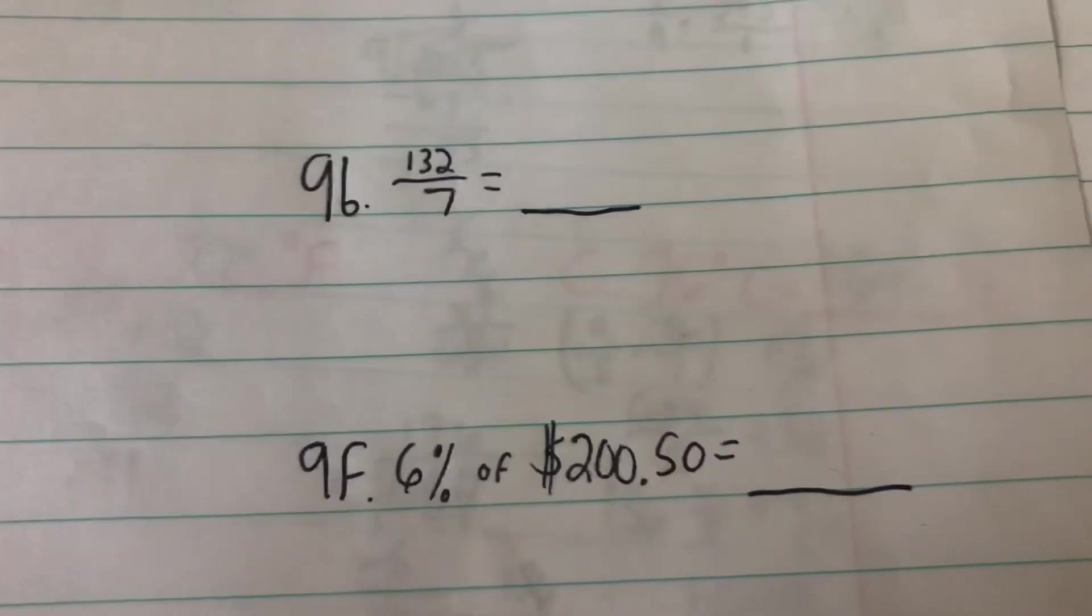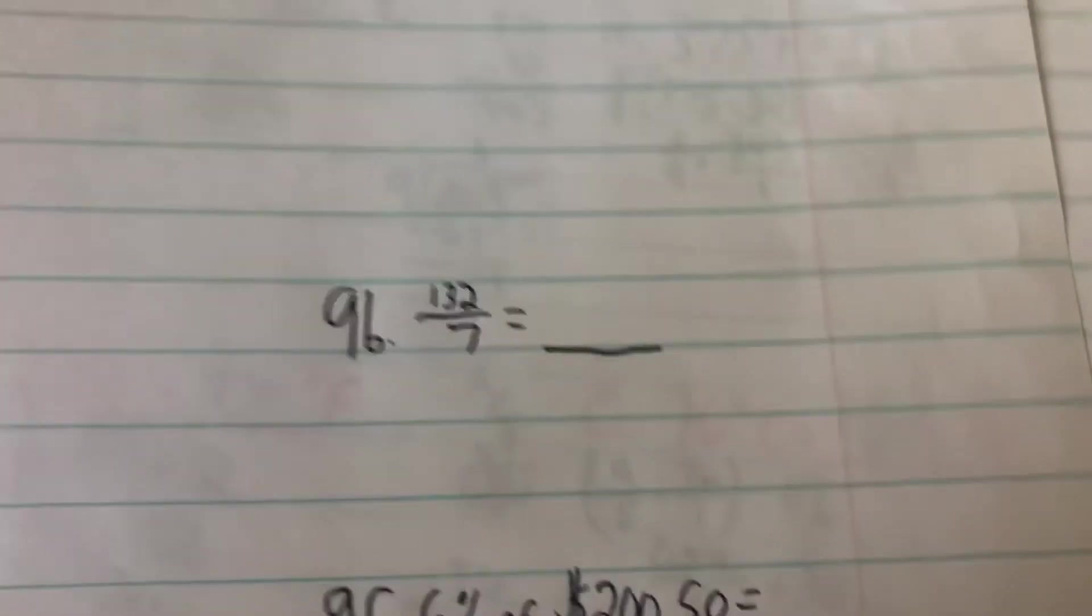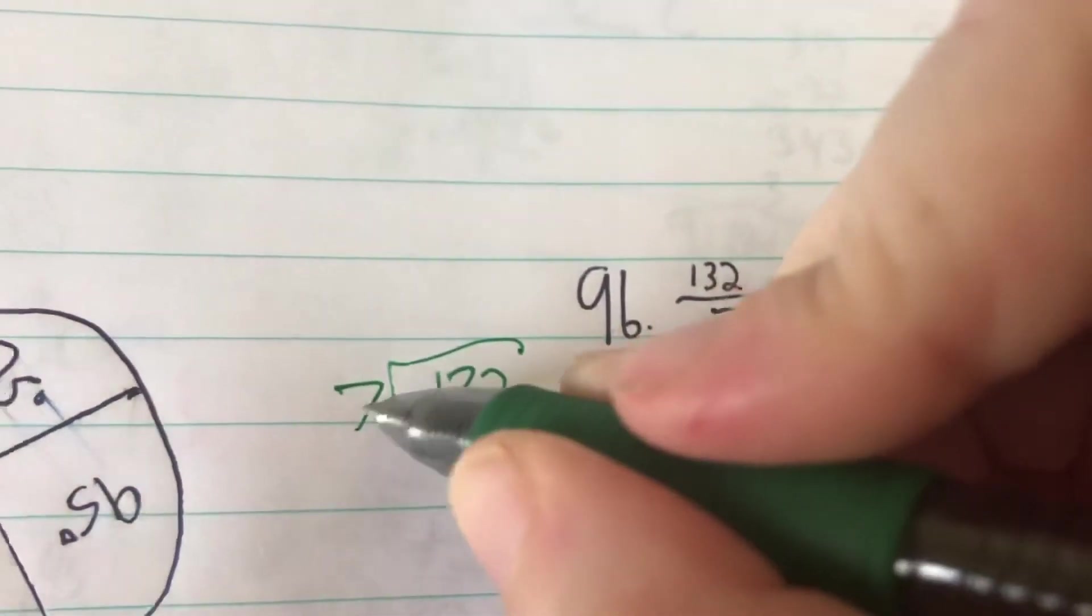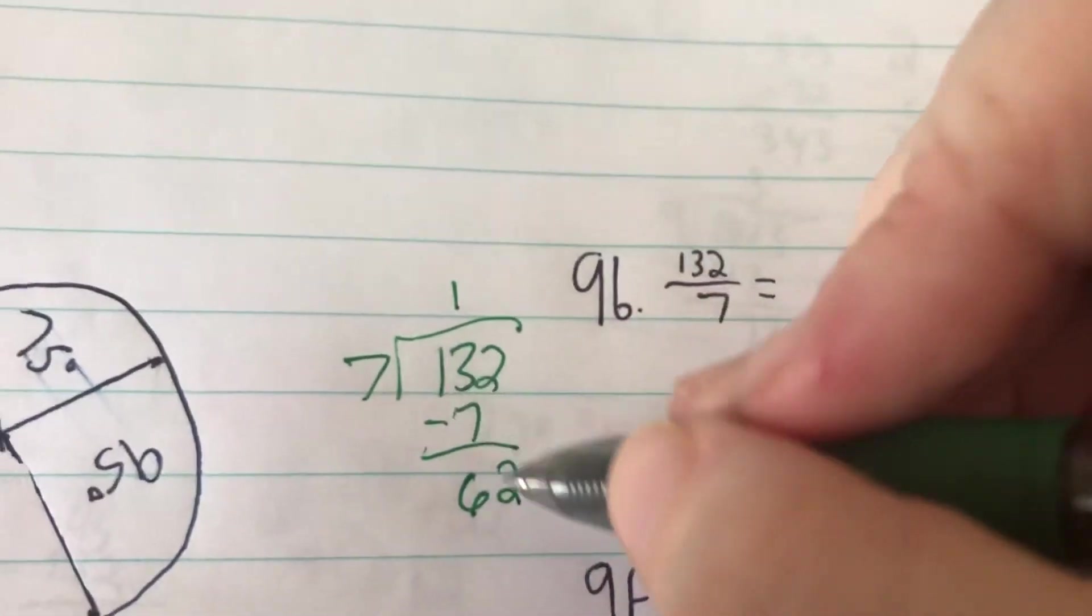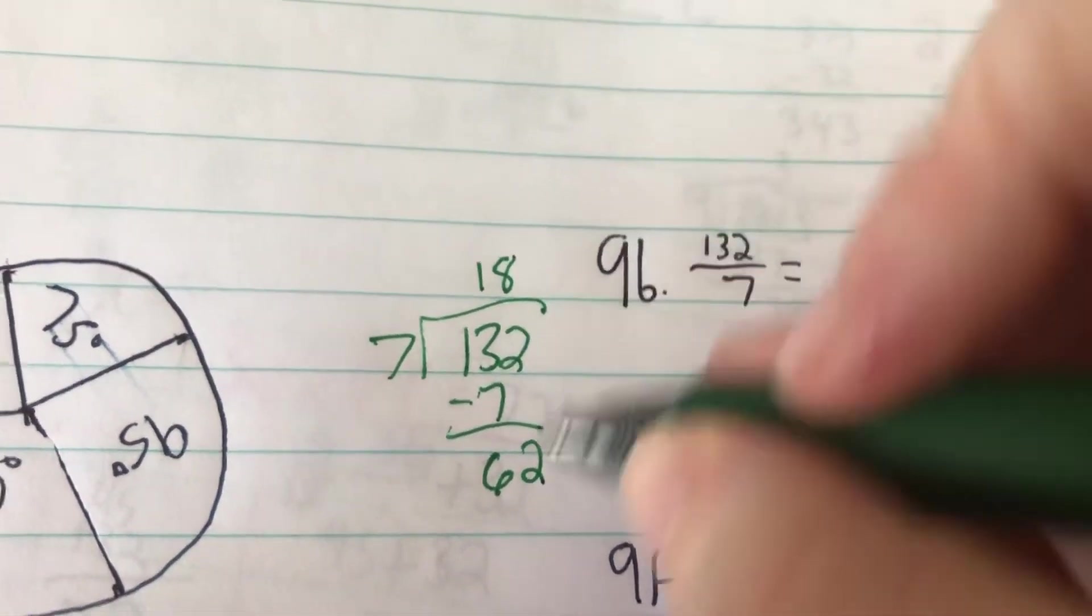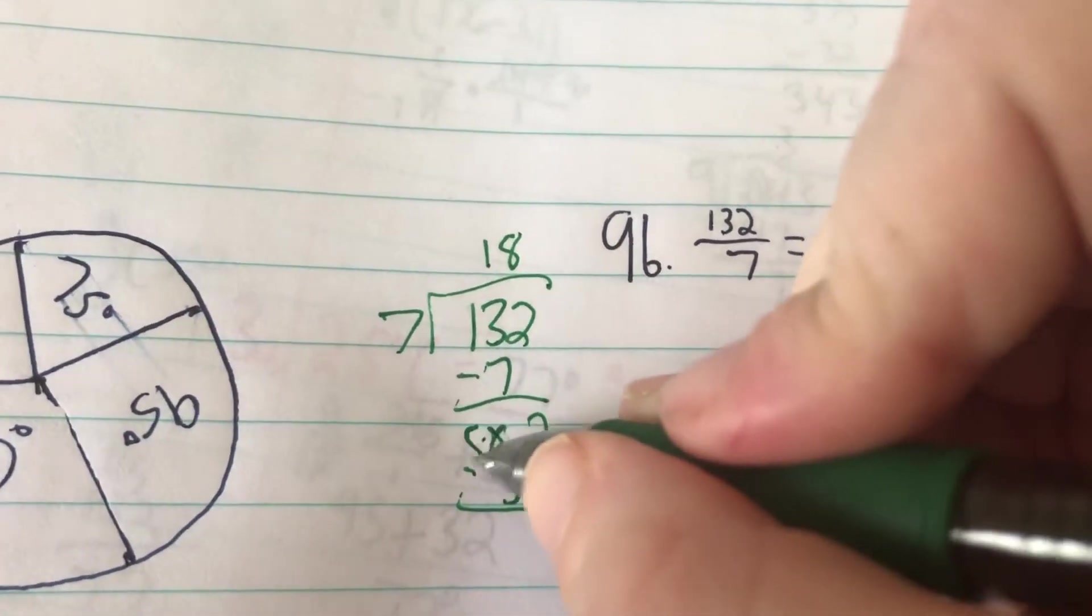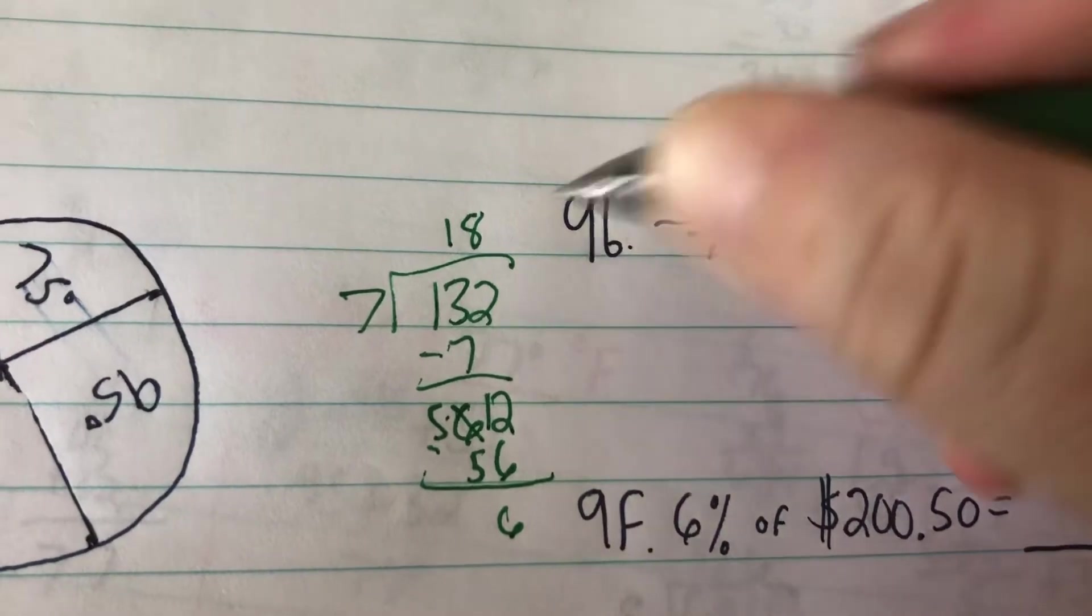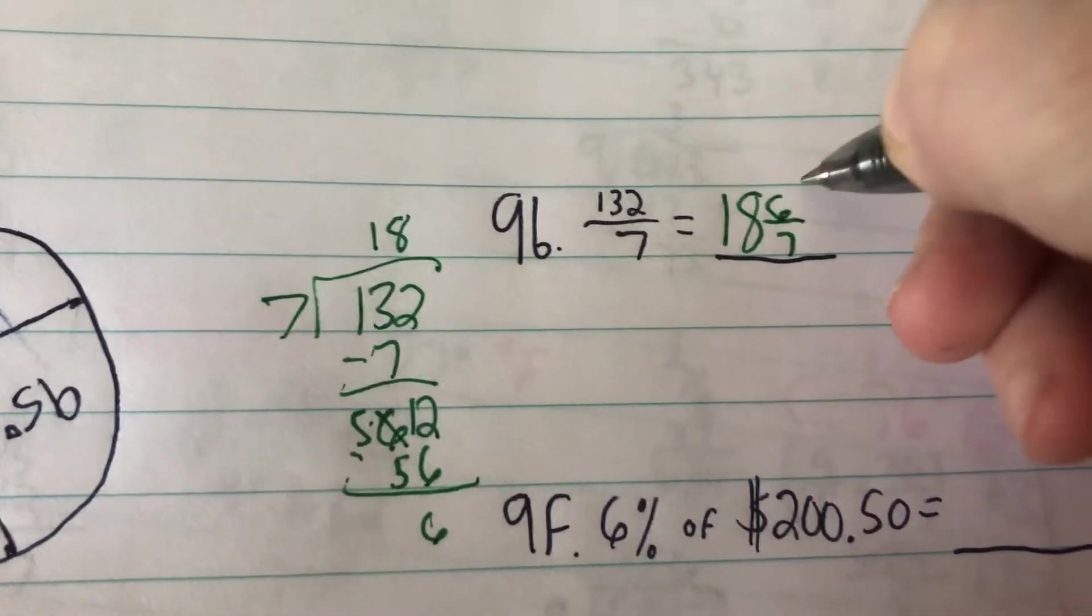And then 9B. We have an improper fraction that it wants us to make into a mixed number. We've done this with some of our temperature conversions, so it shouldn't be that hard. So I just divide that. 132 divided by 7. 7 goes into 13 once. Subtract, you get 6. Bring down my 2. 7 goes into 62 eight times. 7 times 8 is 56. Subtract, 12 minus 6 is 6. So my whole number would be 18. My denominator is going to stay 7, and my numerator will be my remainder, which is 6. So it will be 18 and 6/7.